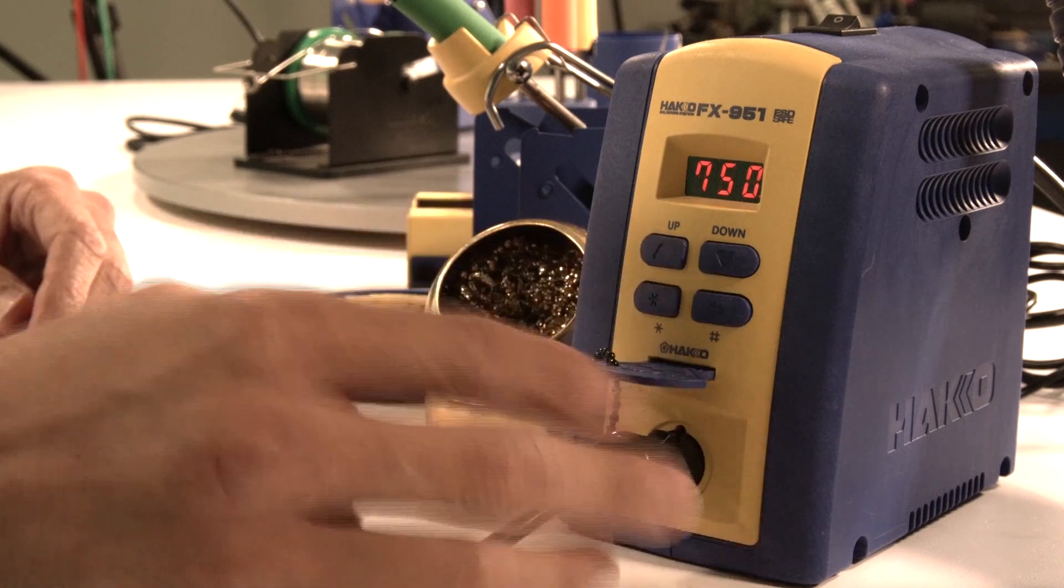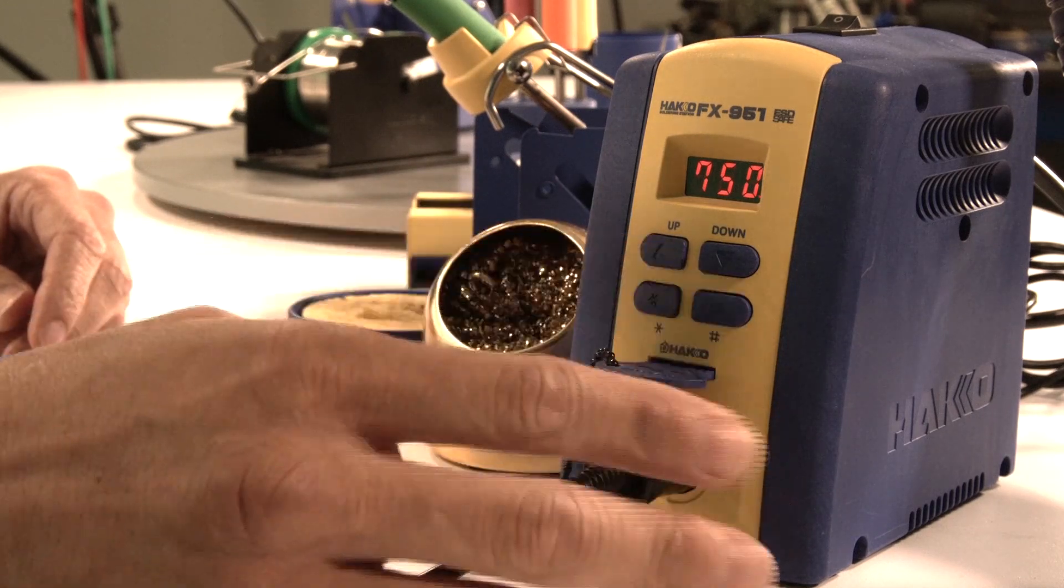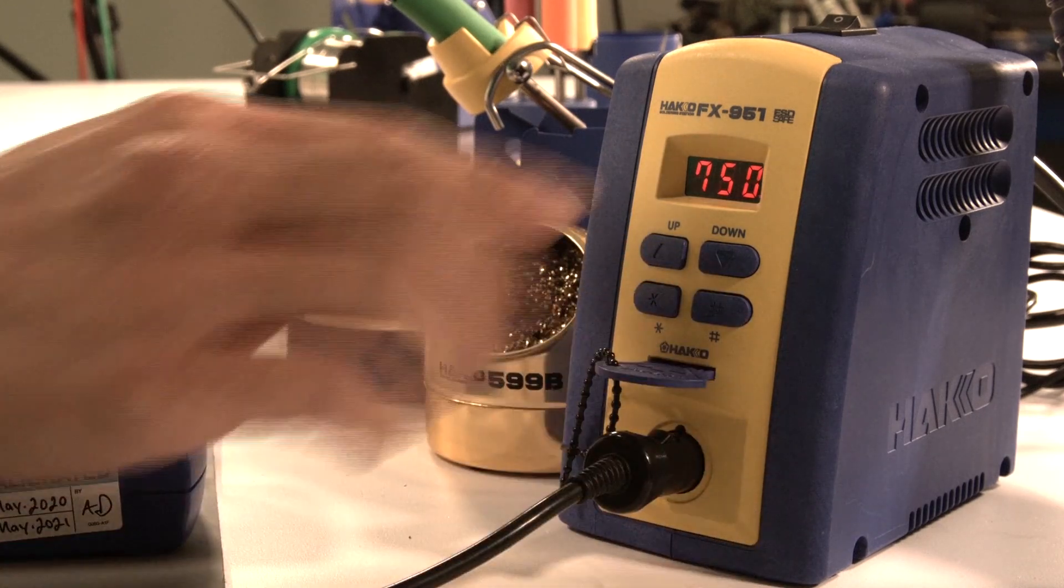I'm going to use the FG-100B again with the auto hold feature. Now the new measurement is 750, matching perfectly to the 750 display on my station. That's when you use the offset, to get your temperatures within a tighter tolerance if you ever need to. Those are the two basic functions you can do right off the bat with the FX-951.